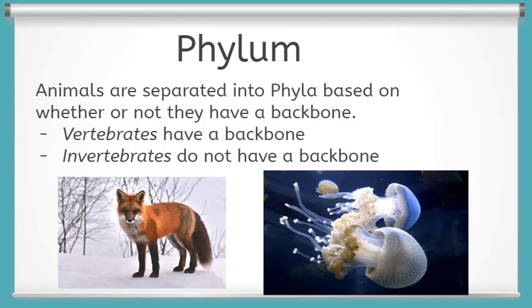After kingdom, we have phylum. Phyla groups specimens in a kingdom based on common characteristics. Animals are grouped into phylum based on whether or not they have a backbone. First, there are vertebrates, such as foxes, dogs, and humans, that all have a backbone. Then there are invertebrates, such as jellyfish, that don't have a backbone or bone structure in their body.